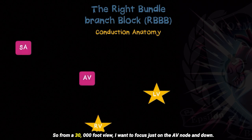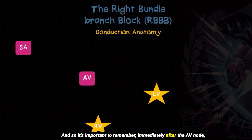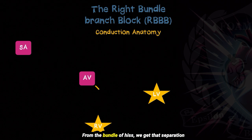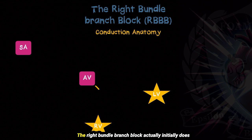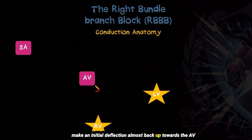From a 30,000 foot view, I want to focus just on the AV node and down. Immediately after the AV node, we get this small little segment known as the bundle of His. From the bundle of His, we get that separation to the right and left bundle branches. The right bundle branch actually initially makes a deflection almost back up towards the AV node and then circles back down into the right ventricle.